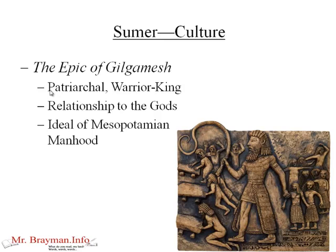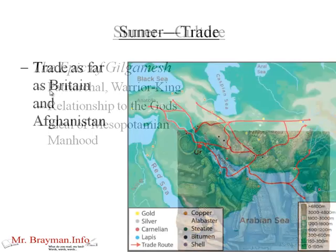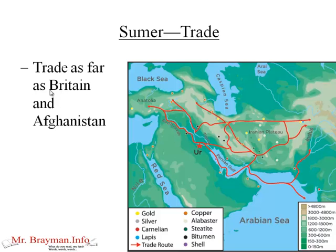Culturally, they did write early epics, and we're going to read a selection from the Epic of Gilgamesh. Gilgamesh is a very patriarchal warrior king — super warrior hero who interacts with the gods. We're studying this in English class as well. He has all the characteristics of a Mesopotamian epic hero: he's the manly man, the ideal man. Trade for Sumer was very limited, mainly because of the technologies they had. Their boats were very simple and had to stay close to the coast. They did have draft animals like horses and carts, but not ocean-going vessels. There was some limited trade as far as modern-day Britain and Afghanistan.